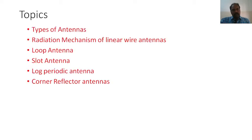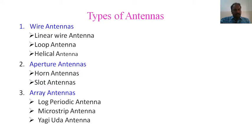First, we are going to see what type of antennas we are having and then the radiation mechanism of those antennas. Specifically, we are going to see linear wire antennas, loop antennas, slot antennas, log-periodic antennas, and corner-reflector antennas. These antennas are categorized based on their structure. Wire antennas include loop antennas, helical antennas, and linear wire antennas.